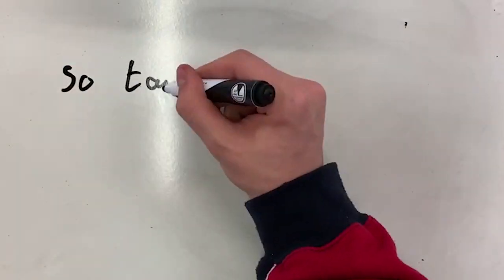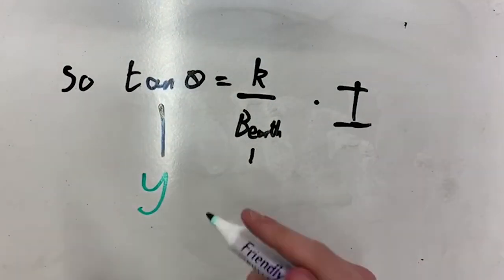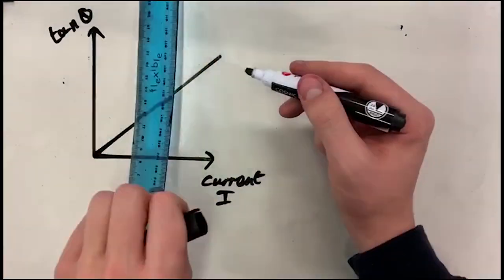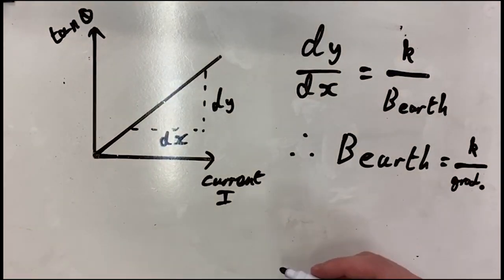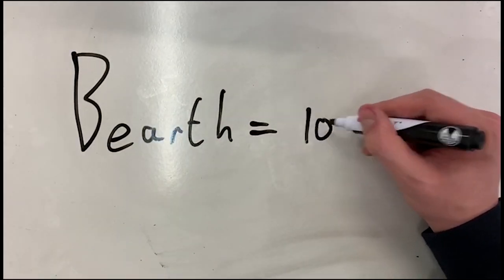Now using our k from part one and rearranging, we can get that tan(theta) is proportional to I. The gradient of this graph will give us k over the magnetic field. So to get Earth's magnetic field, we need to do k over the gradient. Our recorded value of Earth's magnetic field is 10.8 ± 0.4 micro teslas.